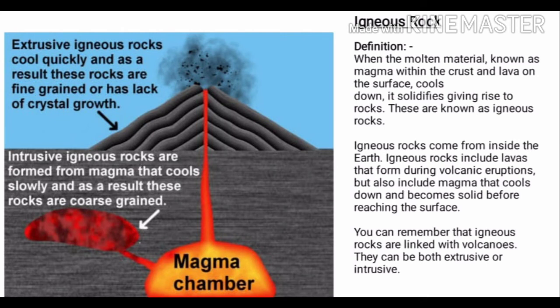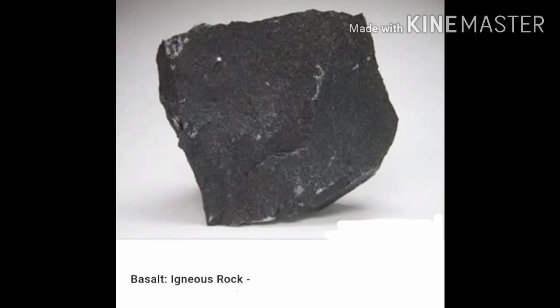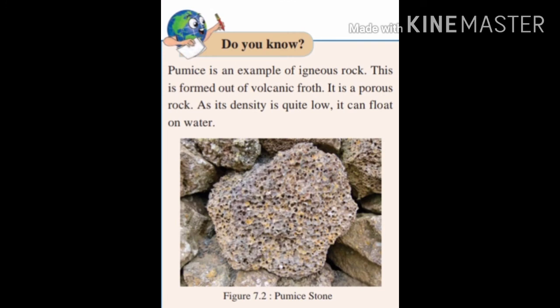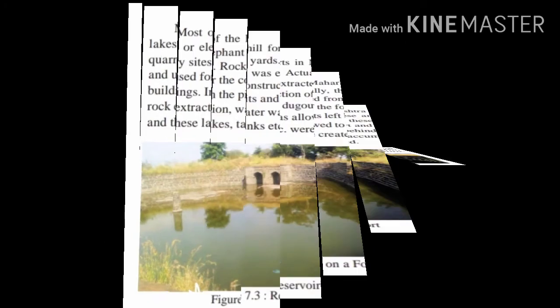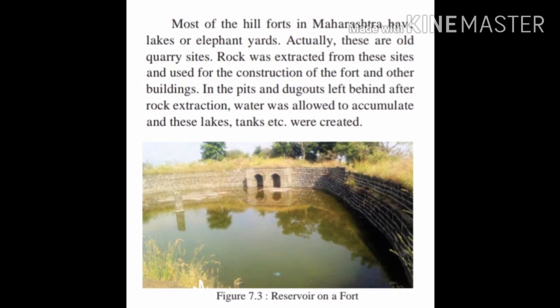Igneous rocks are also called primary rocks. They are normally crystalline in structure. They neither occur in layers nor do they contain fossils. Granite, diorite, gabbro, basalt, and obsidian are some examples of igneous rocks. The Maharashtra plateau and the Sahyadris are formed out of igneous rocks; basalt is a major example. Pumice is also an example of igneous rocks — formed out of volcanic froth. It is a porous rock, and as its density is quite low, it can float on water.